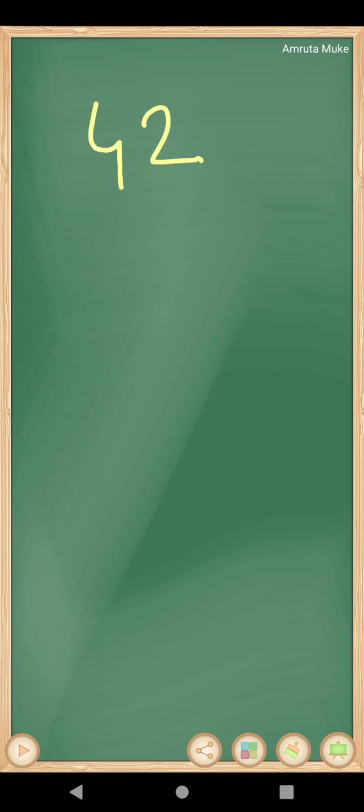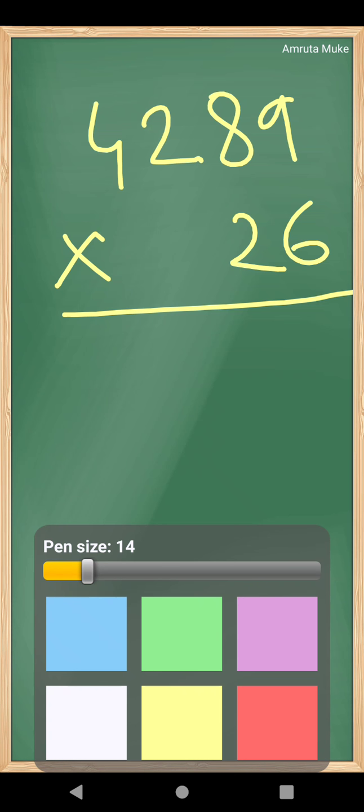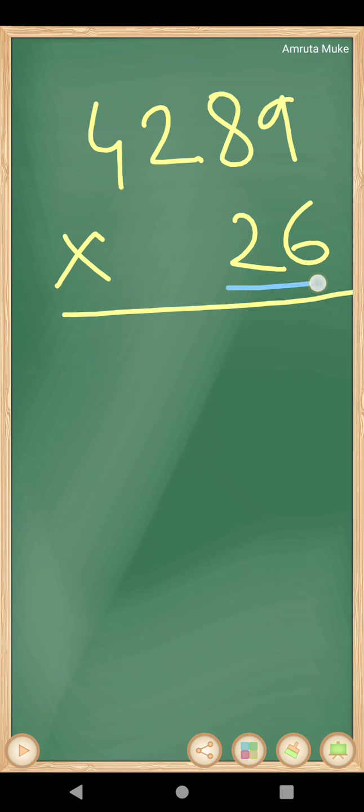So now see students, 4,289 multiply by 26. To do multiplication, we have to start from the units place. Okay, so first take this number 6 and multiply, do multiplication, this 6 and 9.